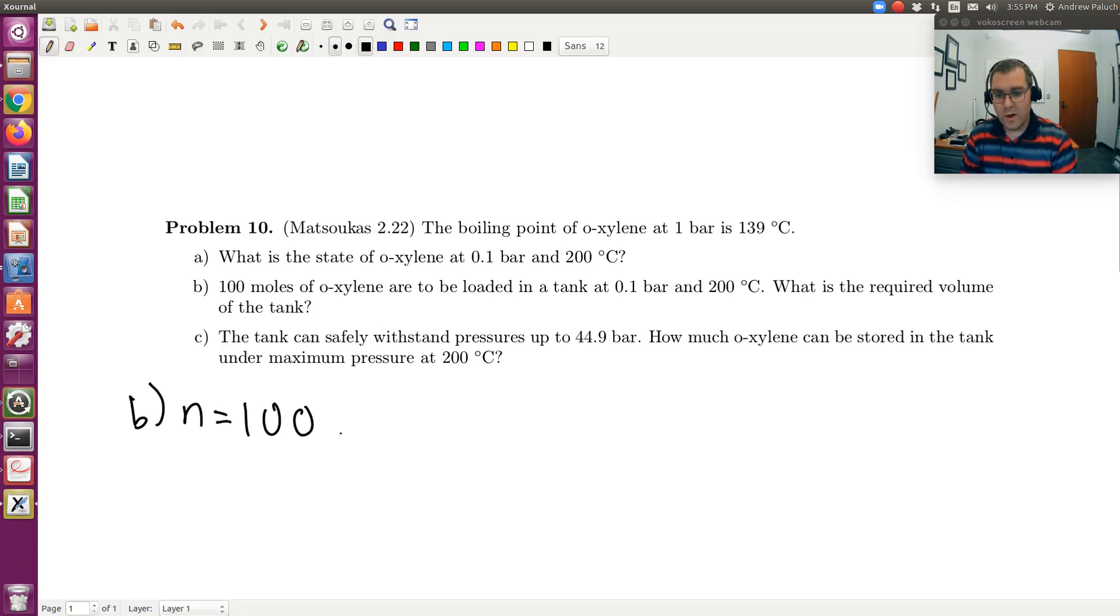We also know that our pressure is 0.1 bars and temperature is 200 degrees C. From A, we said that at this state, we'll have a vapor. So I have a vapor at a low pressure and 200 degrees C. Now question is, what's the required volume? Well, if I have a single component, single phase system, I have two degrees of freedom.